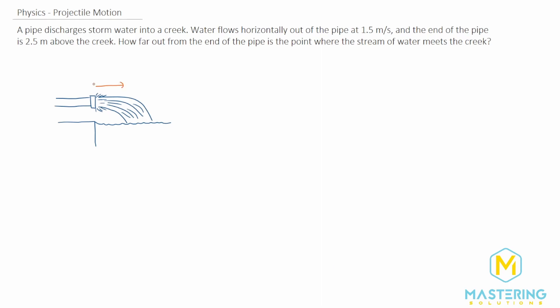So we have the velocity in the x-direction, and that initial is 1.5 meters per second. They say that the pipe is 2.5 meters above the creek. So right here is 2.5 meters.